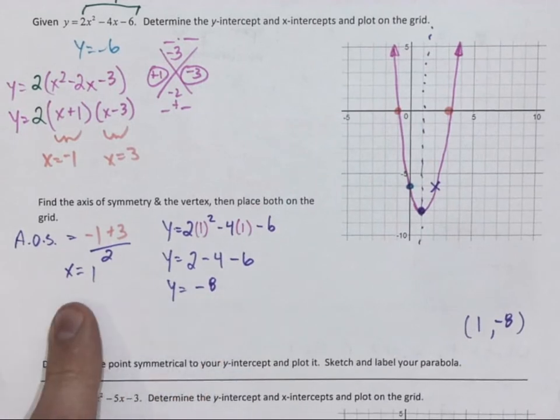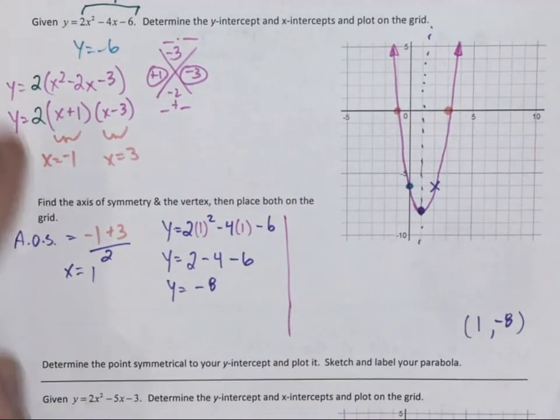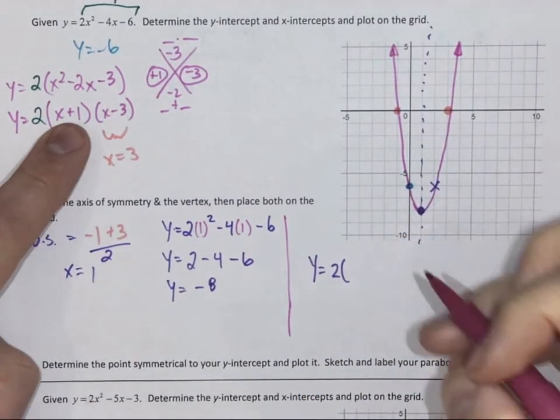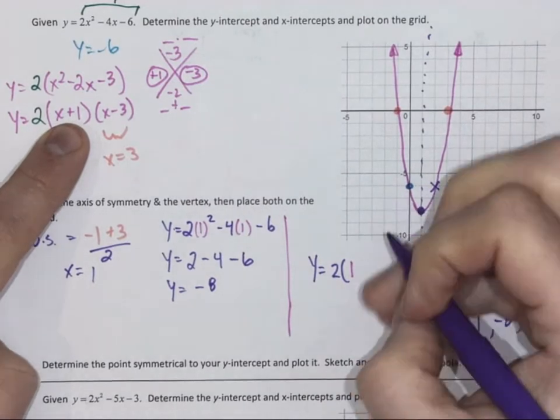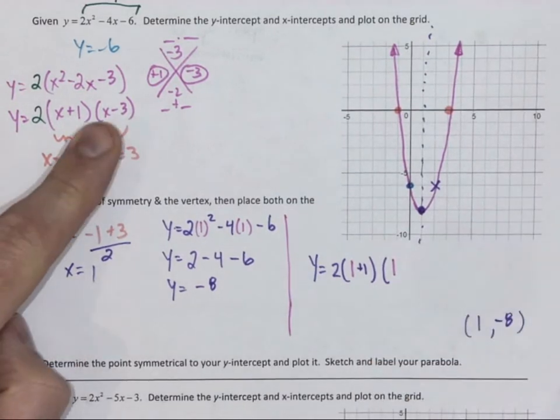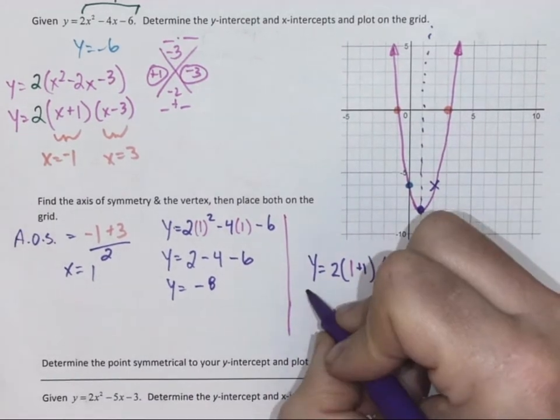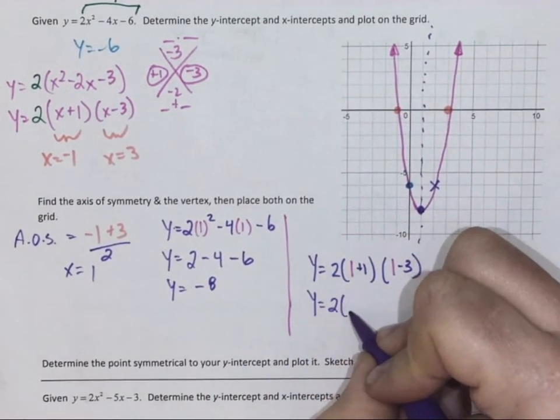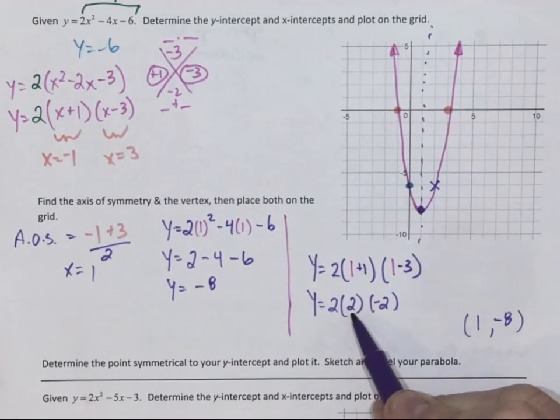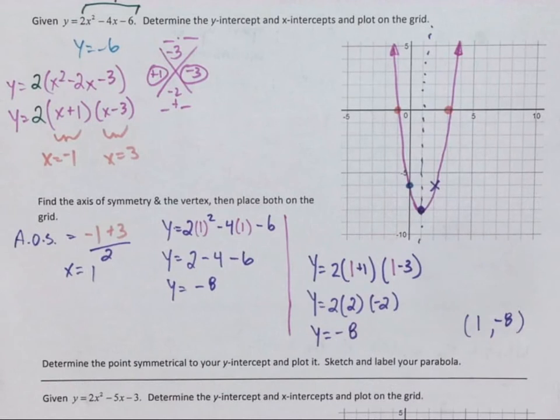If I took my x value and subbed it into factored form, I would get the exact same thing. Just to show you, it doesn't matter which form I sub it in. x plus 1, so 1 plus 1, and 1 take away 3. So there's my x value subbed into factored form. I need one answer in each bracket, so 1 plus 1 is 2. 1 take away 3 is negative 2. 2 times 2 is 4 times negative 2, 4 times negative 2 is negative 8. Same answer.